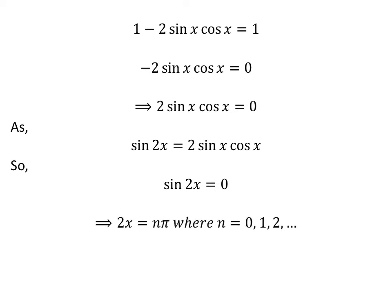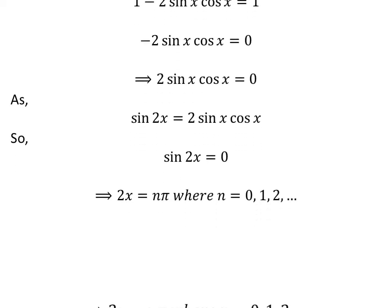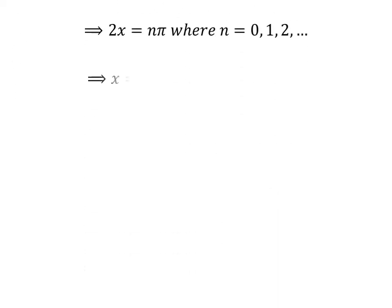Sin of 2x equals 0 is only possible when 2 times x is equal to n times pi, where n is 0, 1, 2, and so on. Taking 2 to the left gives us x equals n times half of pi.